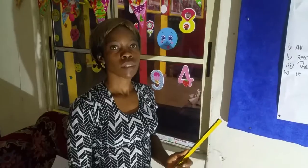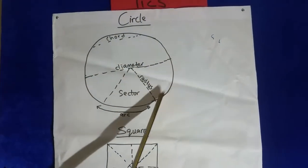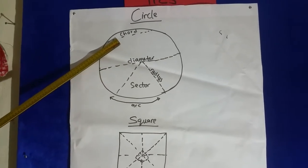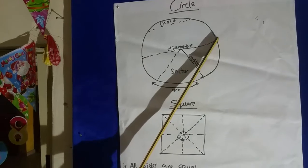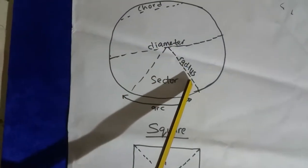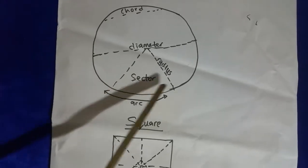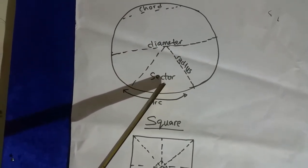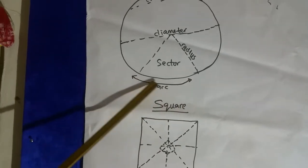Then we move to circle. This is the shape of a circle — it is round. These are the parts of a circle: this is the chord, this is the diameter — a line dividing the circle into two. A line that bisects the diameter is known as the radius. This region is known as the arc.